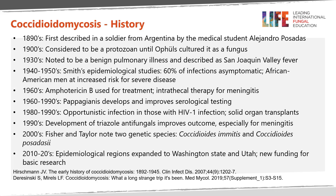The first treatment was developed in the 1960s, and this was Amphotericin B. Between 1960 and the 1990s, Papagiannis followed Smith and developed and improved serologic testing. In the 1980s and 90s, opportunistic infections were described in those with HIV-1 infection and solid organ transplants. Triazole antifungals began to be used for treatment of coccidioidomycosis in the 1990s, including for meningitis.